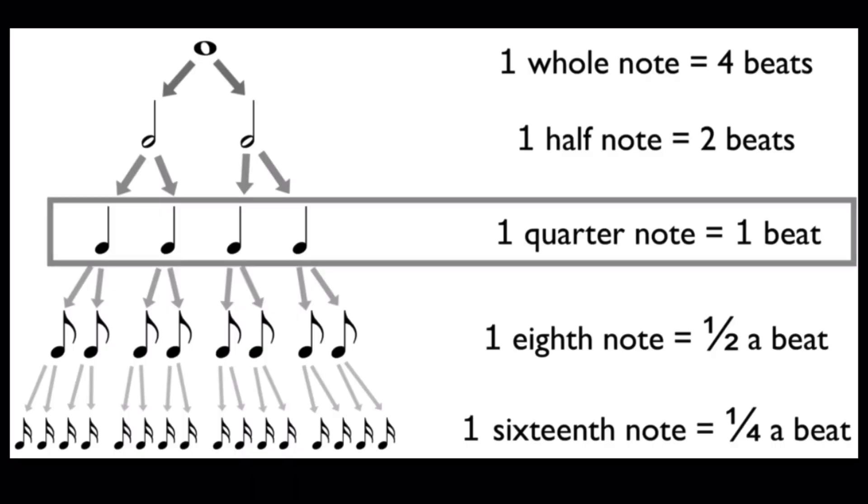If we were gonna do eighth notes it would be: one and two and three and four and. And if we're gonna do sixteenth notes it's: one e and a, two e and a, three e and a, four e and a. So they're really fast. For every single quarter note there are four sixteenth notes.